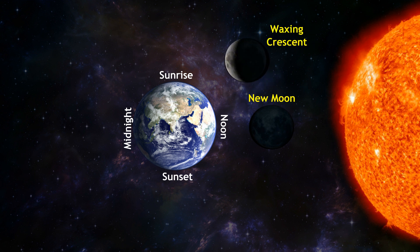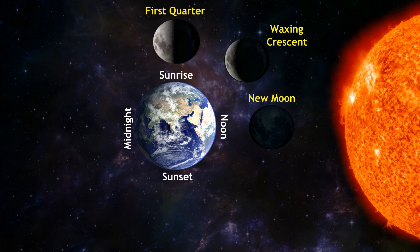Waxing Crescent. First Quarter. At this stage, the moon appears half in the sky.